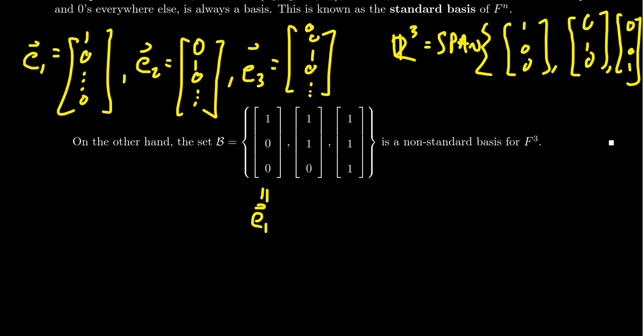Then you have [1, 1, 0], which that's actually just E_1 plus E_2. And then the third vector is actually E_1 plus E_2 plus E_3, [1, 1, 1], and so this is not the standard basis. It has vectors in it other than the E's, but it is still a basis.